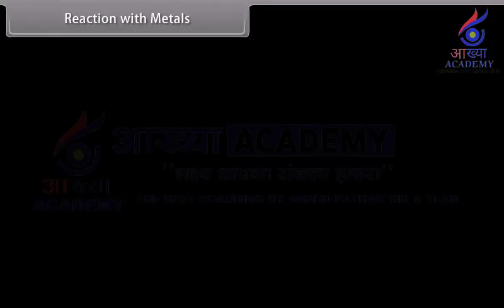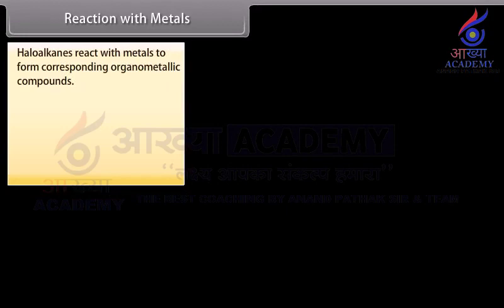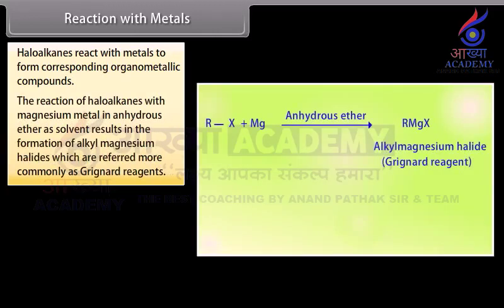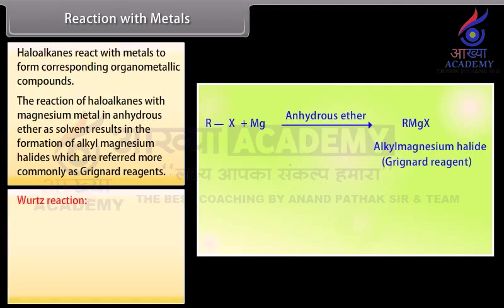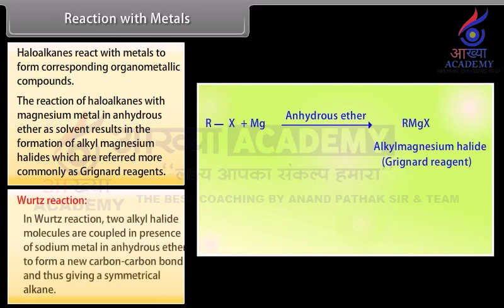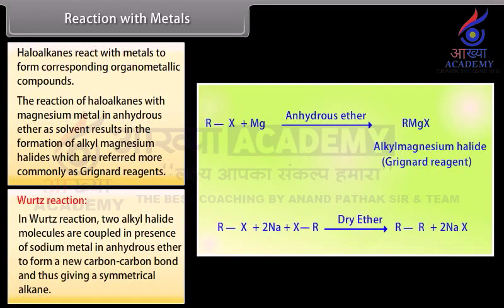Reaction with metals: haloalkanes react with metals to form corresponding organometallic compounds. The reaction of haloalkanes with magnesium metal in anhydrous ether as solvent results in the formation of alkyl magnesium halides, which are referred to more commonly as Grignard reagents. In the Wurtz reaction, two alkyl halide molecules are coupled in the presence of sodium metal in anhydrous ether to form a new carbon-carbon bond, giving a symmetrical alkane.